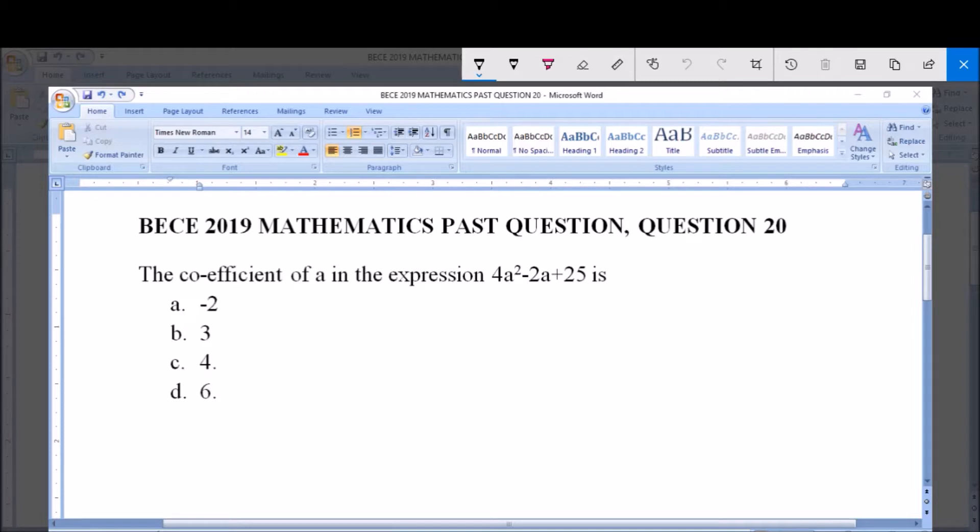The coefficient of a in the expression 4a squared minus 2a plus 25 is: a) minus 2, b) 3, c) 4, and d) 6.